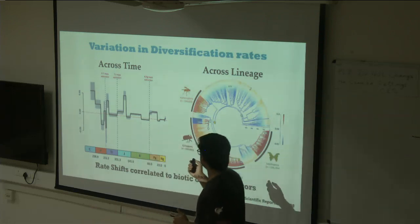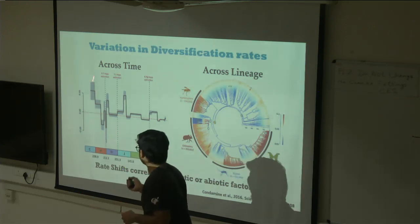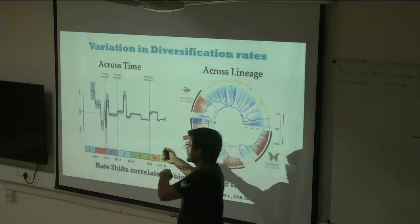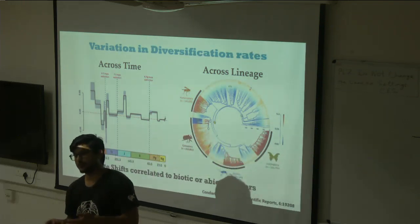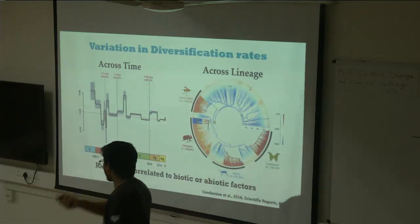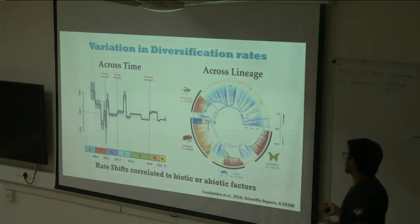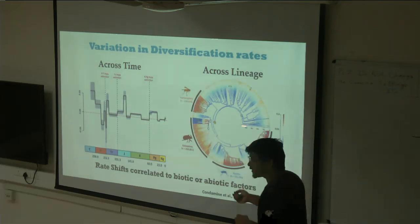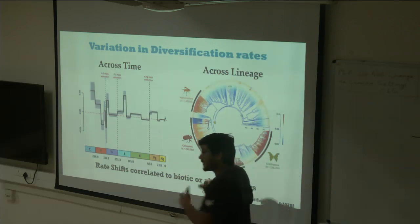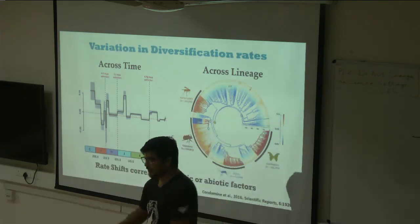Diversification rates vary across time. Here's an example from insects: diversification rates have gone up and down several times over the last 300 million years. Such variation is usually correlated with environmental factors like paleotemperature, precipitation, and biome shifts. You can also see diversification rates changing across different lineages — higher diversification rates appear in certain groups like butterflies, beetles, dipterans, and hymenopterans, usually associated with key innovations.